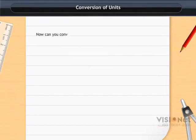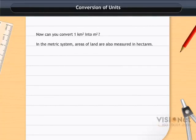Now, can you convert 1 km² into m²? In the metric system, areas of land are also measured in hectares. A square of side 100 m has an area of 1 hectare.